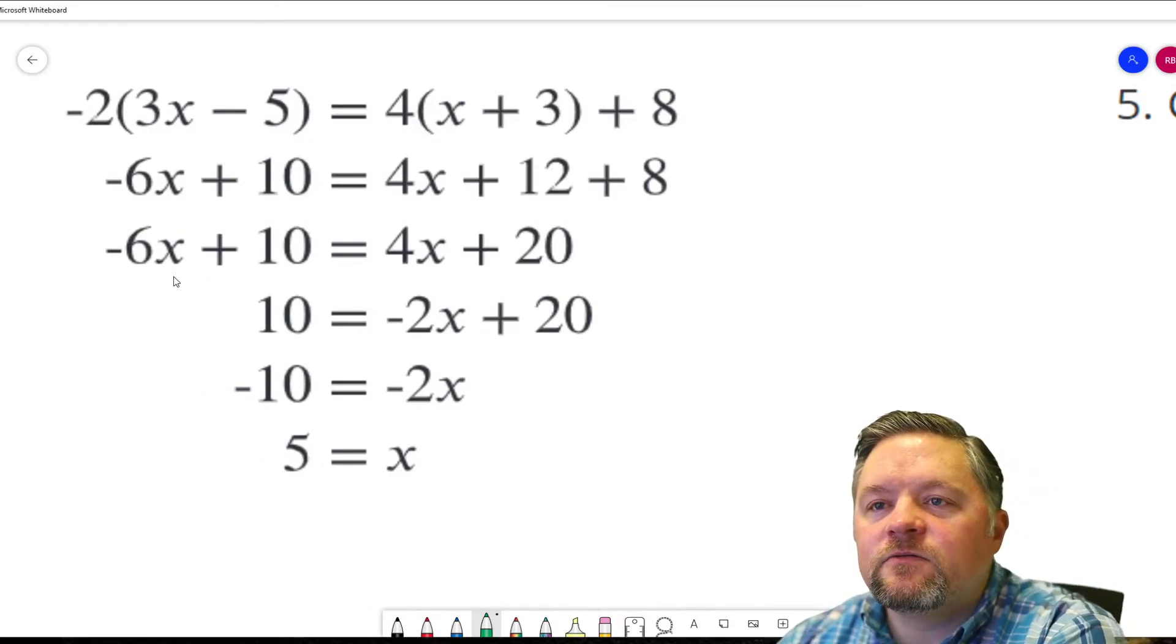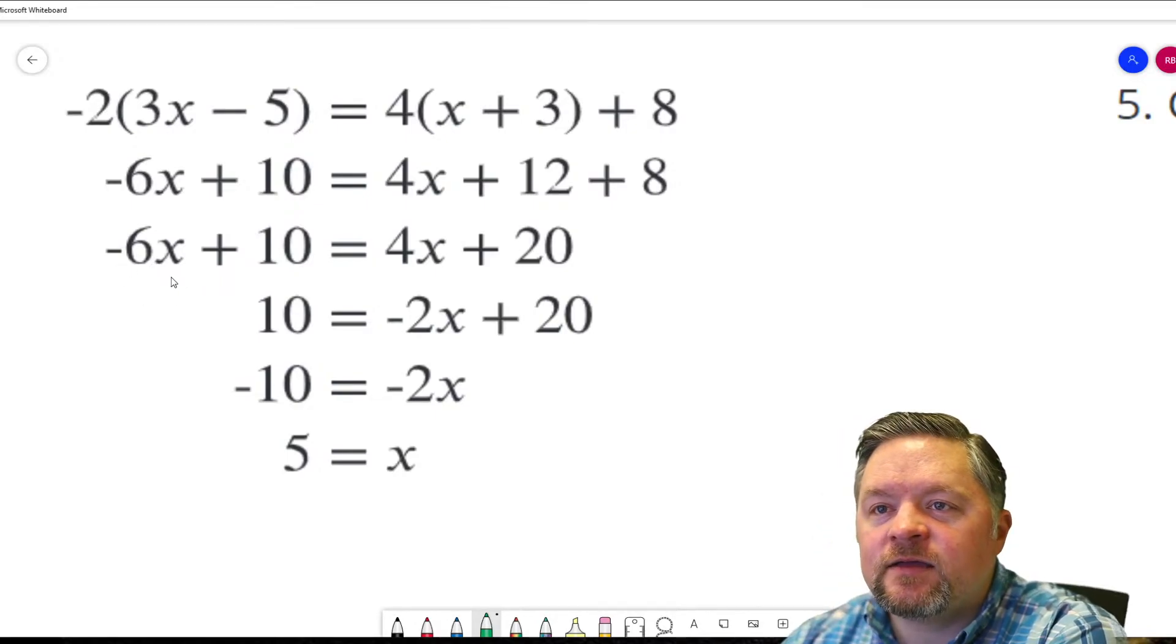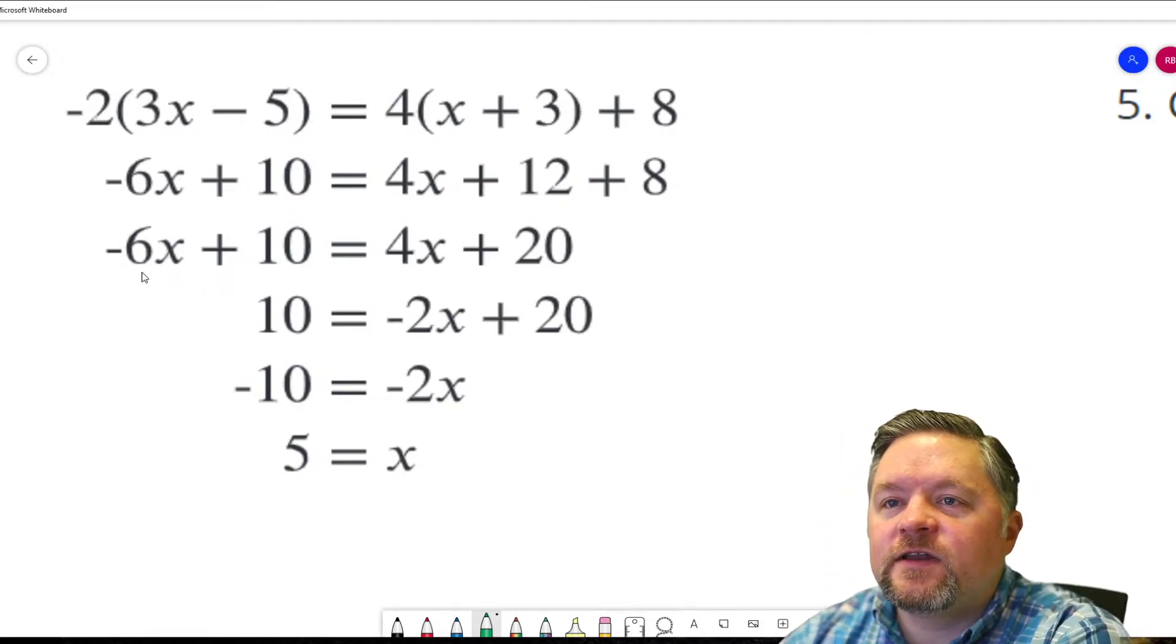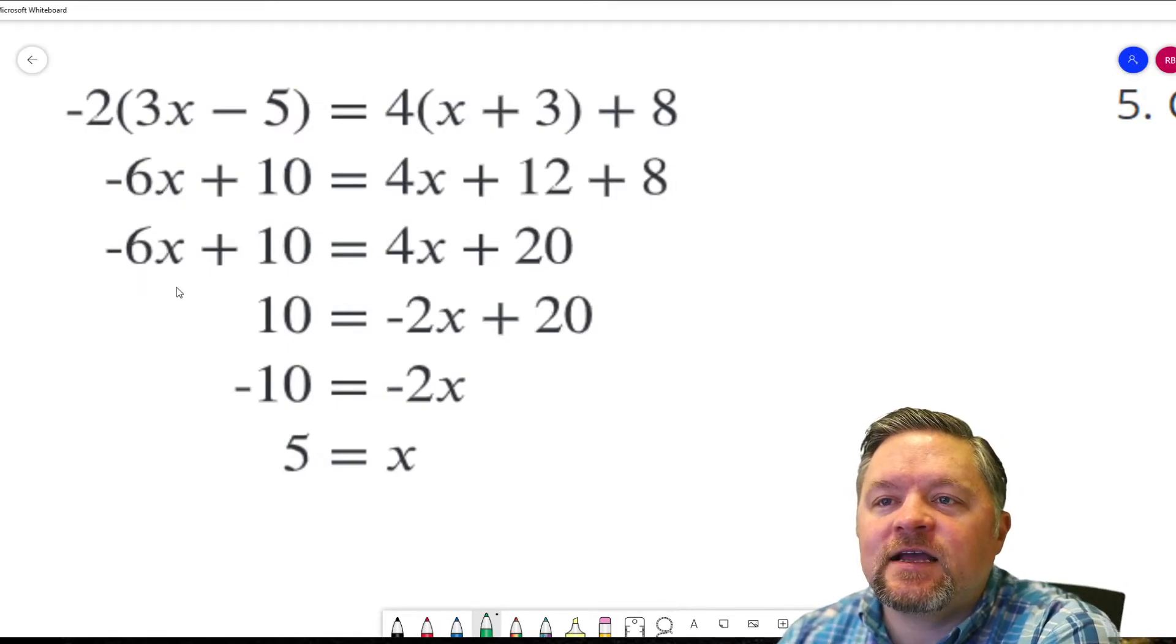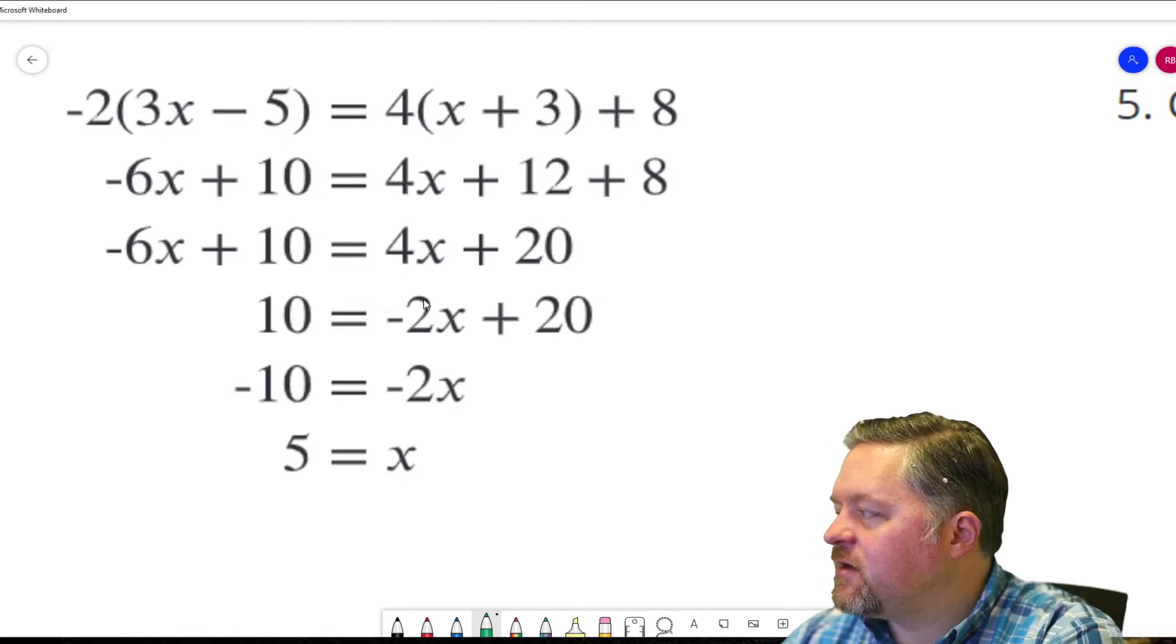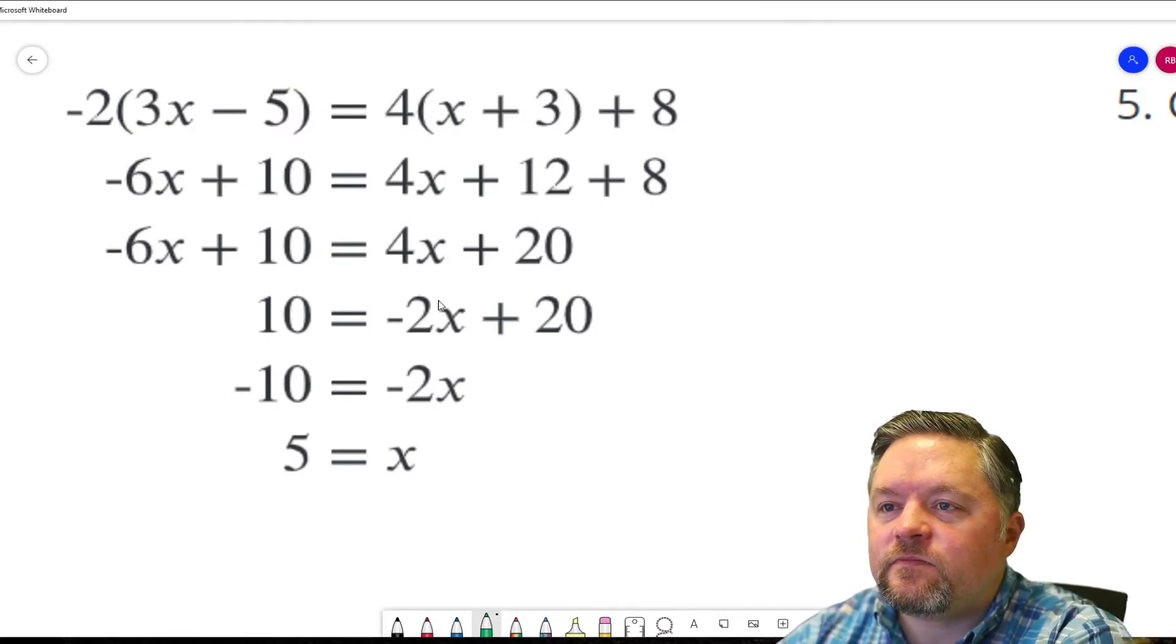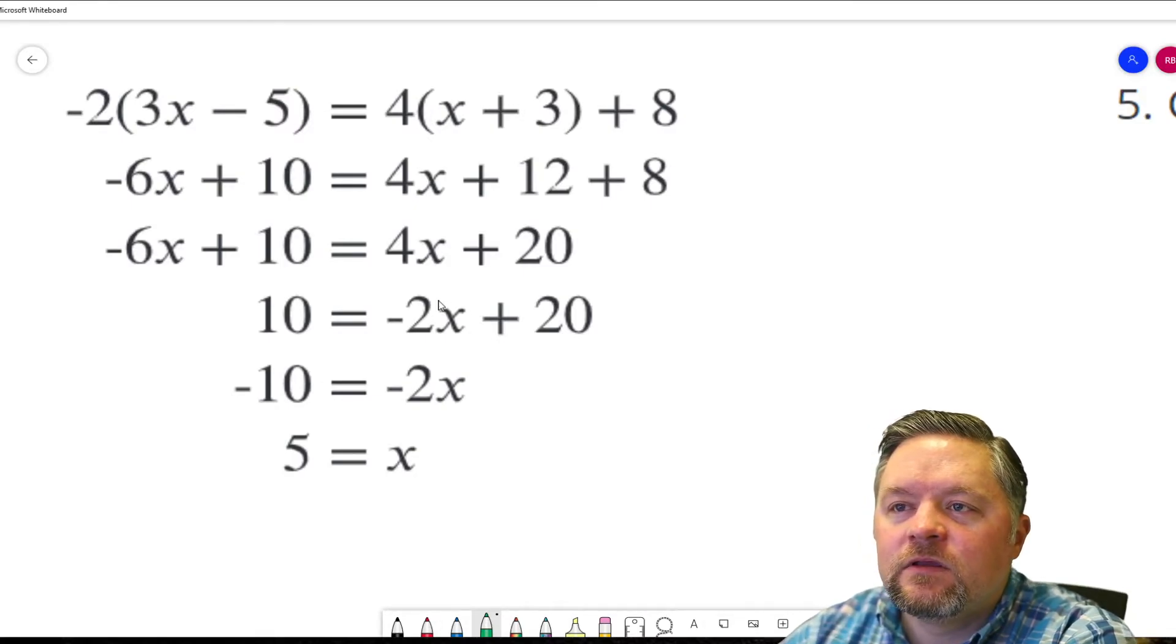Now, what did we do? It looks like the negative 6x went away. So, how do we get rid of a negative 6x? We add 6x. If we add 6x to this side, we got to do it to the other side. 4x plus 6x is not negative 2x.